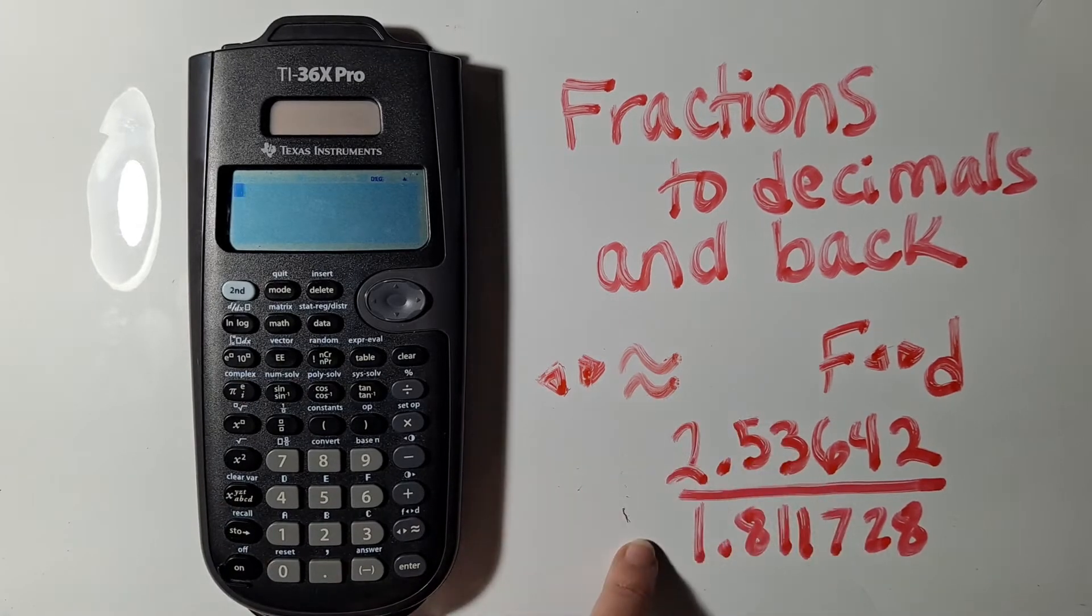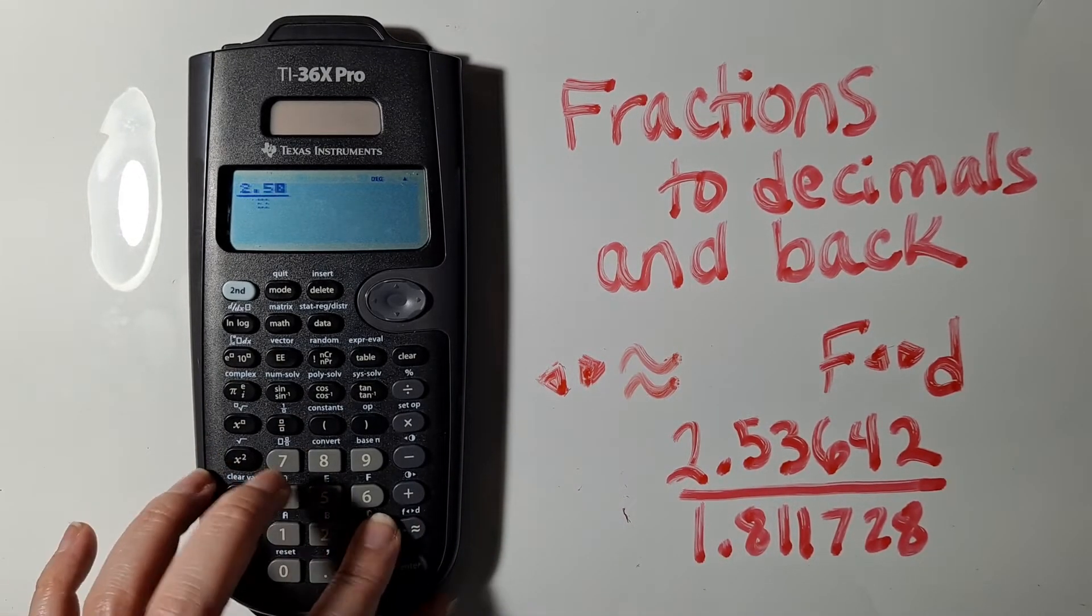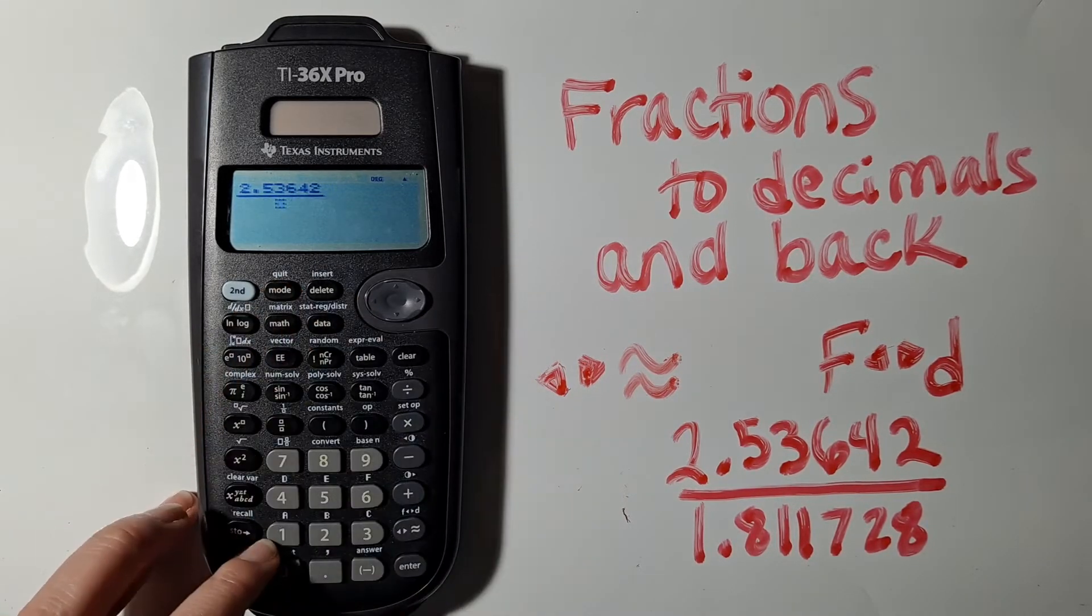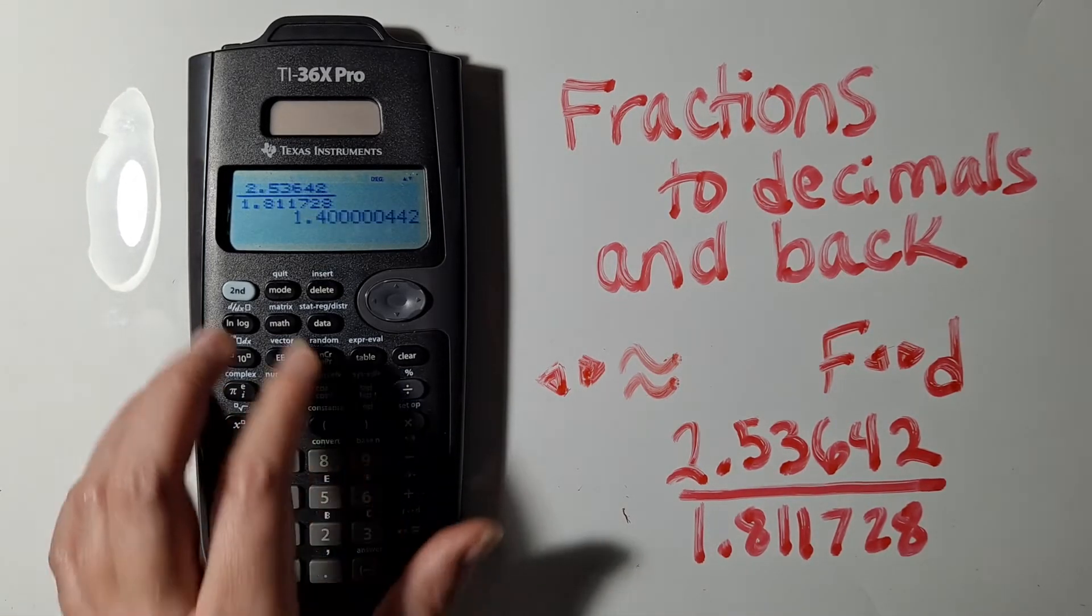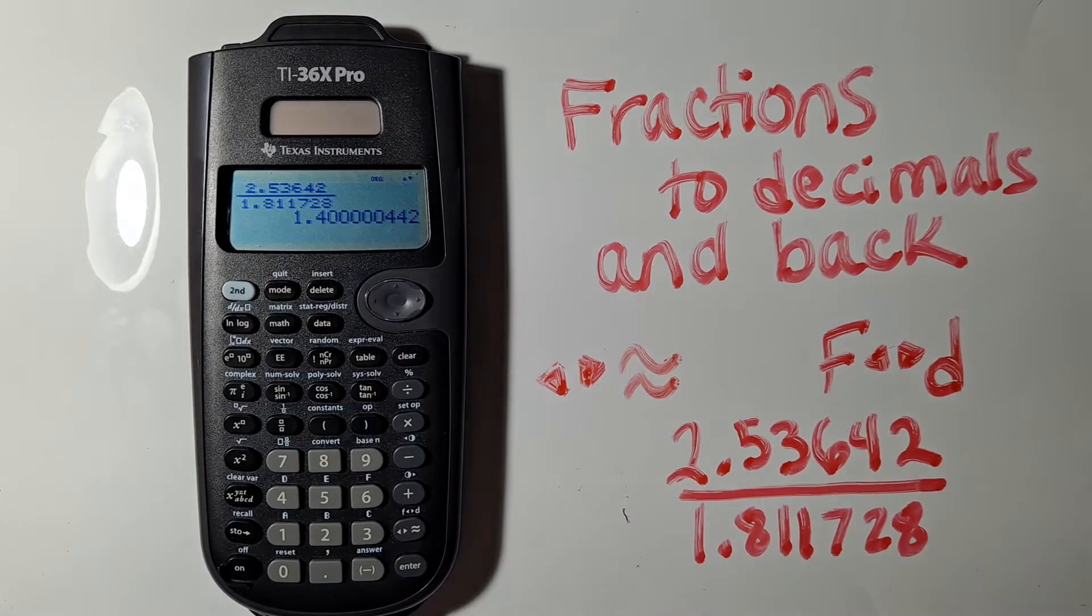So I have this example problem written down here. I'm going to do 2.53642 divided by 1.81128. Now when I enter that I can see that it's approximately equal to 1.4 followed by a whole bunch of decimals.